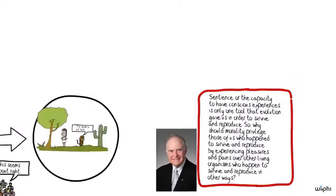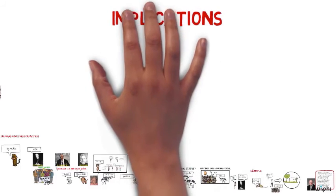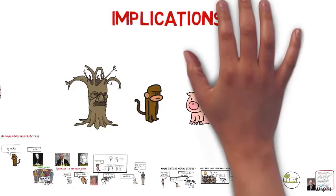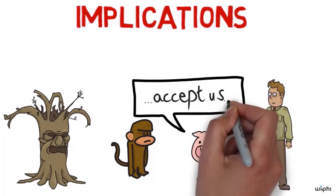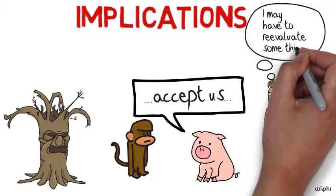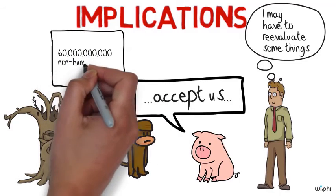Now, obviously, which of these theories of moral status we accept is going to have profound implications for how we live our lives. For example, if we decide that animals or plants have moral status, then it will turn out that a lot of what we currently do in everyday life is deeply morally problematic, including but not remotely limited to the fact that we currently kill over 60 billion non-human animals a year for food alone.